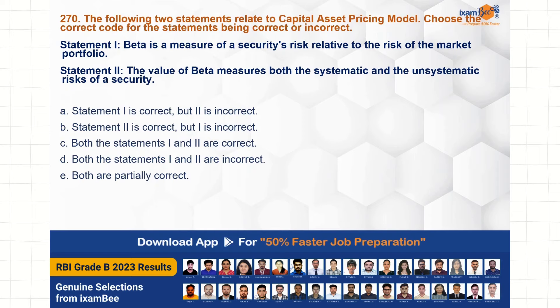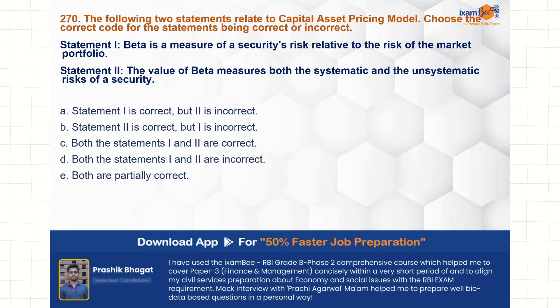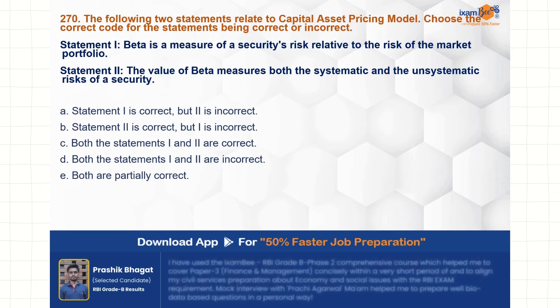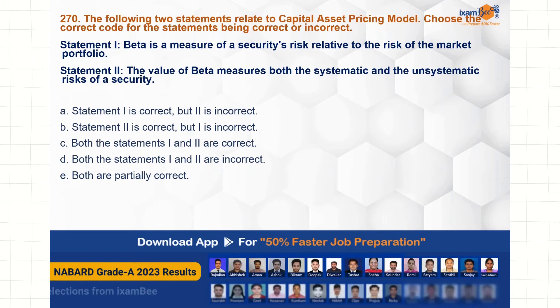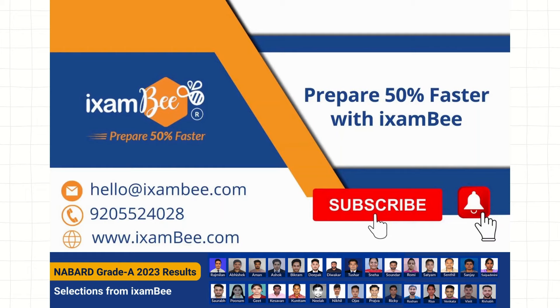The last question relates to the CAPM — Capital Asset Pricing Model. Statement 1: Beta is a measure of a security's risk relative to the risk of the market portfolio. Statement 2: The value of beta measures both systematic and unsystematic risk. Do let me know the correct answer in the comment section. Thank you for watching — join iExambi and prepare 50% faster.